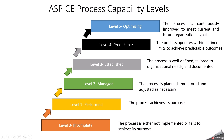Level 4 is named as predictable, meaning a quantitatively managed process. The process is quantitatively managed and optimized based on data-driven decisions. Performance is measured and controlled in a predictable manner.